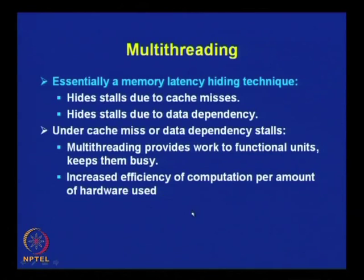Multithreading hides stalls due to cache misses and data dependencies. Whenever these types of stalls occur, we can take help of multithreading to utilize the functional units, and it leads to increased efficiency of computation per amount of hardware used. With a certain amount of hardware, multithreading helps improve efficiency from the perspective of computation per unit of hardware available.